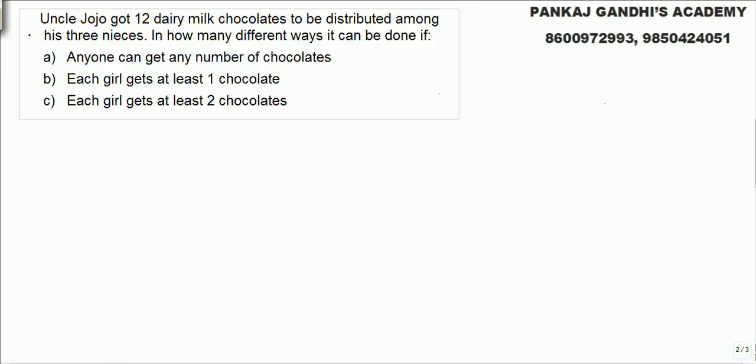Part B. Each girl gets at least one chocolate. We know A plus B plus C total 12. Look in the previous question 0 was allowed. Now when I say each one gets at least one chocolate, first fulfill that requirement.